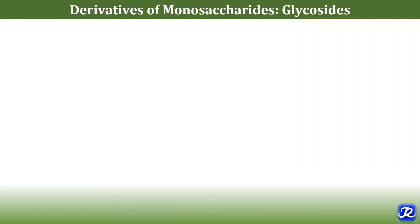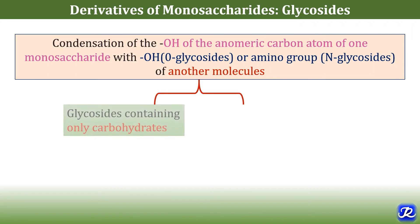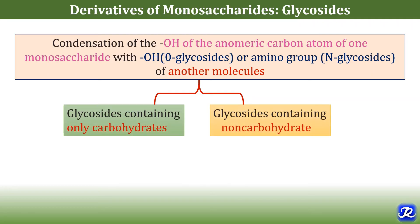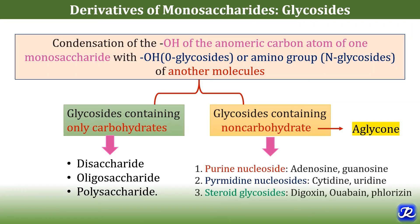Glycosides are also important derivatives of monosaccharides. They are formed by condensation of the hydroxyl group of the anomeric carbon atom of one monosaccharide with the hydroxyl or amino group of another molecule. That other molecule can be either a carbohydrate or a non-carbohydrate. Some glycosides contain only carbohydrates; some contain a non-carbohydrate moiety called the aglycon. Glycosides containing only carbohydrate form disaccharides, oligosaccharides, and polysaccharides. Examples of glycosides containing non-carbohydrates include purine nucleosides like adenosine, pyrimidine nucleosides like cytidine and uridine, and steroid glycosides like digoxin, ouabain, and phlorizin.